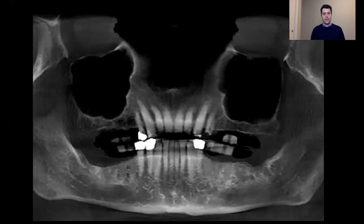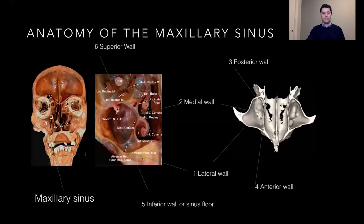In the past, we were used to plan for sinus augmentation only using a panoramic image where we were only able to see the sinus in two dimensions. But we know that the morphology of the sinus is more complex because the sinus is composed by six walls: the lateral, the medial, the anterior, the posterior, the superior, and the sinus floor. We also have the maxillary ostium, which communicates with the middle meatus into the nasal cavity.